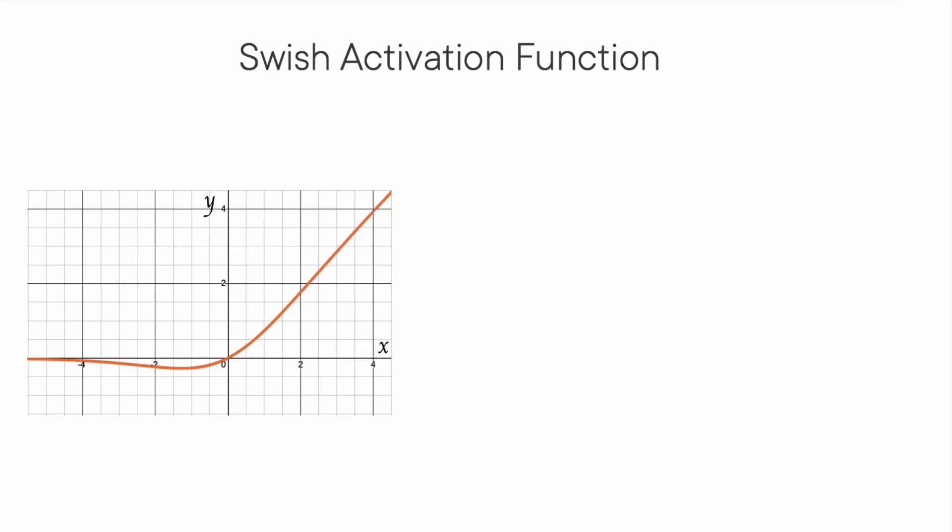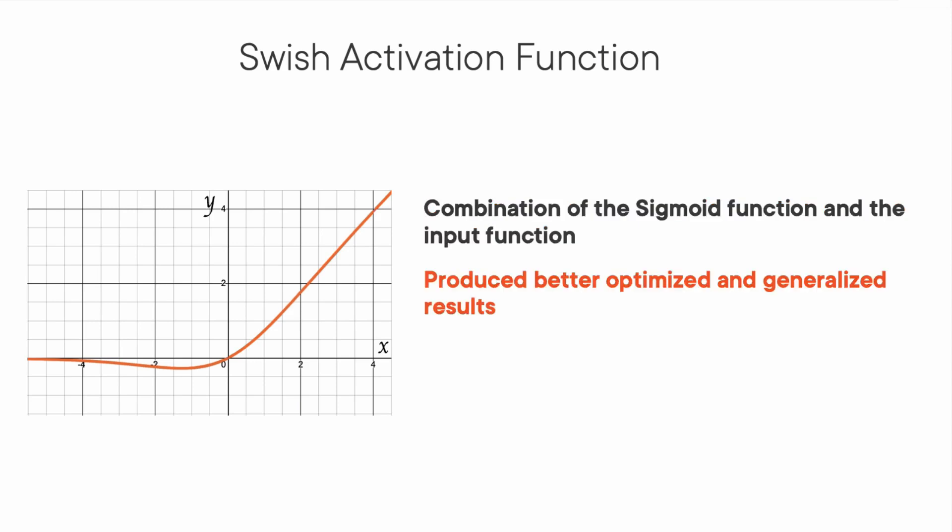The last activation function I want to discuss is the swish activation function. If you notice, it is one of the first compound functions proposed by the combination of the sigmoid function and the input function. The smoothness property makes it produce better optimization and generalization results when used in training deep learning architectures. This function doesn't suffer from vanishing gradient problems.